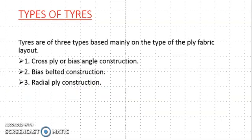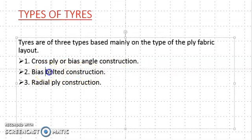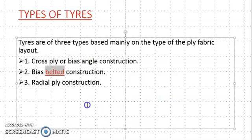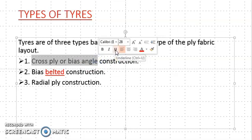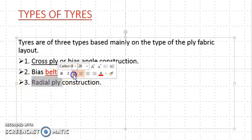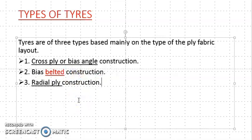We must have knowledge about plies because tires are named and classified according to the arrangement of plies. There are three types of tires based on the type of ply fabric layout: first, cross ply or bias angle construction; second, bias belted construction, where an additional belt is used alongside the cross ply; and third, radial ply construction, where the direction of the ply is radial.